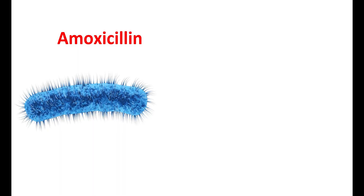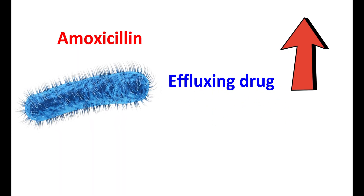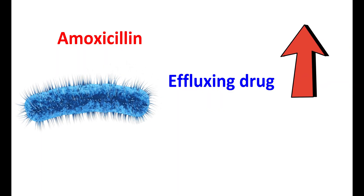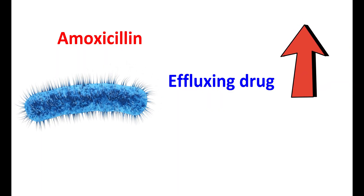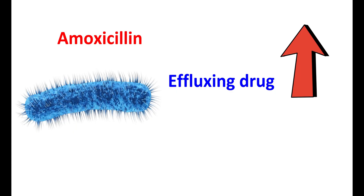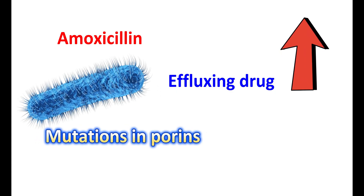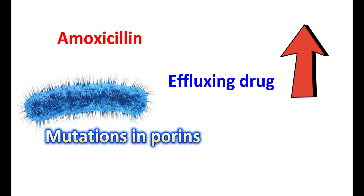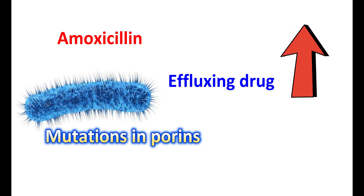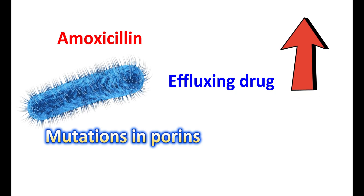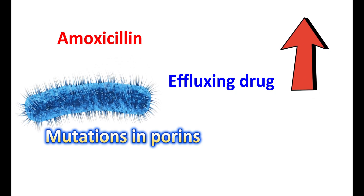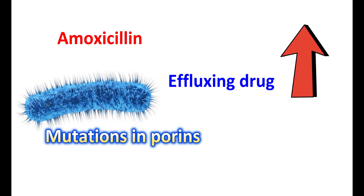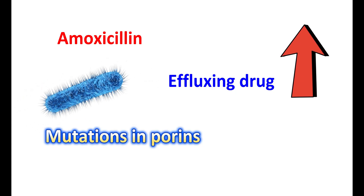Some bacteria can also develop resistance by effluxing the drug out of the bacterial membrane through efflux pumps, which pump amoxicillin out of the bacterial cell. A few gram-negative bacteria can also develop mutations in their porins, which eliminate the drug through pores on the membrane. Due to the decreased intracellular concentration of amoxicillin, it becomes ineffective. Amoxicillin is highly effective against bacteria that are actively dividing, as it inhibits the cell wall synthesis required for bacterial replication.